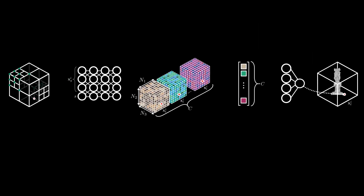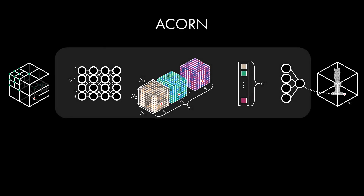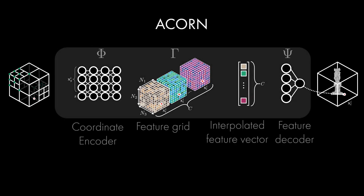With this hybrid implicit-explicit architecture and online multi-scale decomposition of the input domain, ACORN is well-suited to represent large-scale signals.